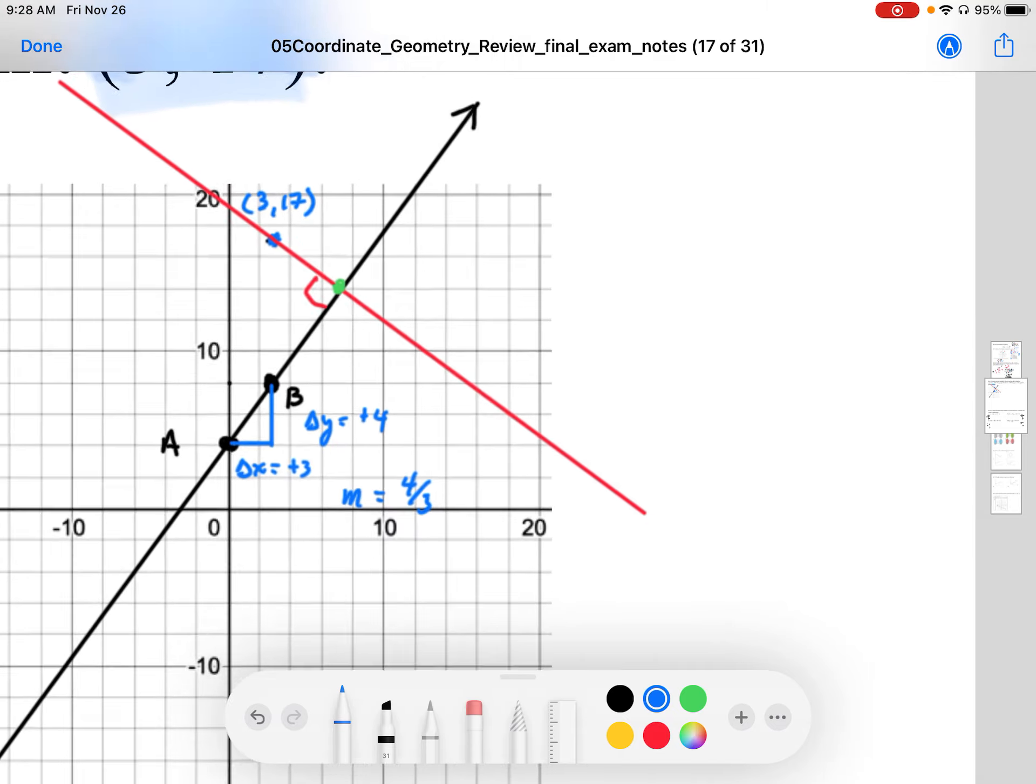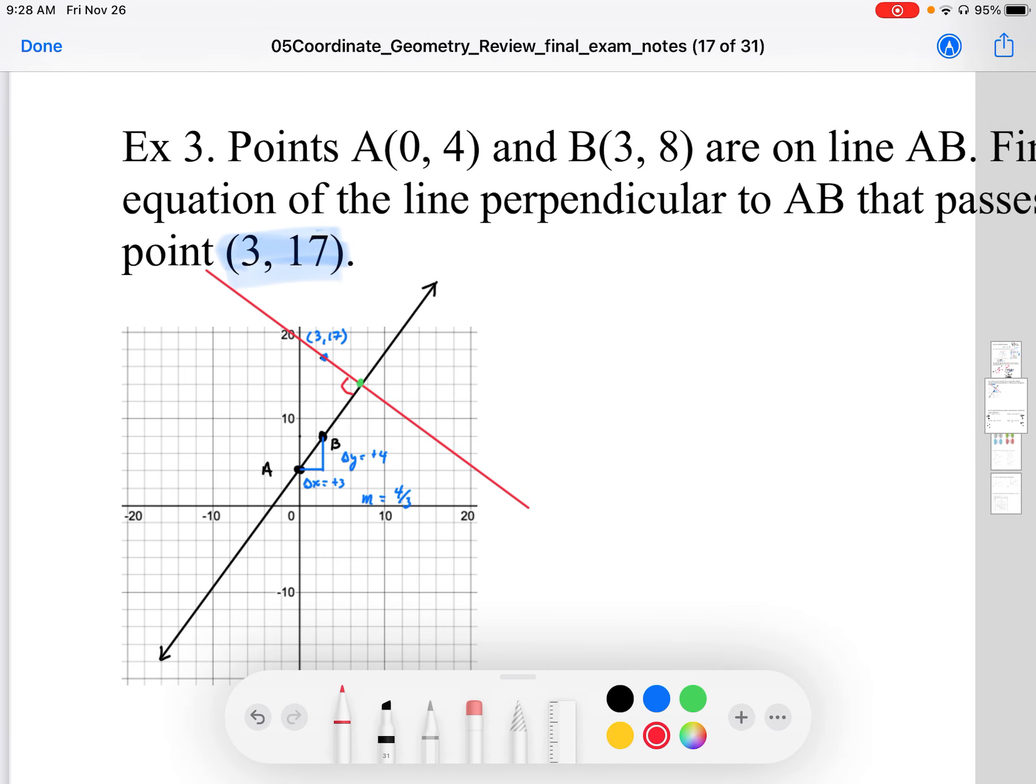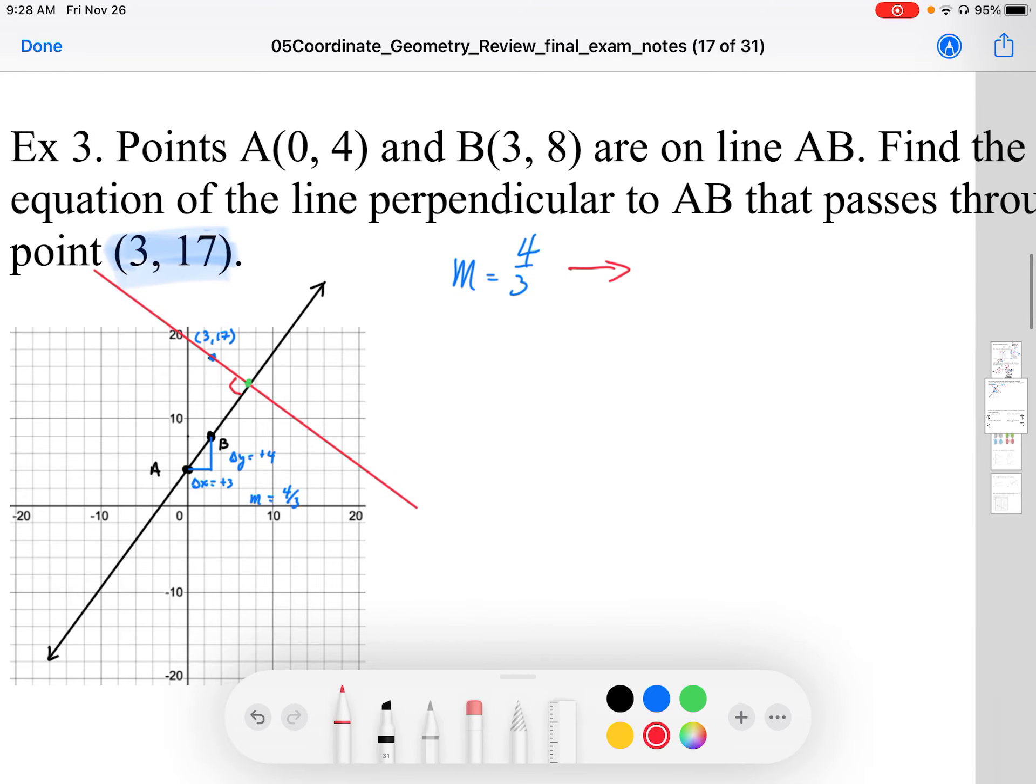So I've got my slope. If I want the slope of the perpendicular line, the red line, I'm just going to write this here—slope is 4 over 3. That makes the perpendicular slope negative 3 over 4.